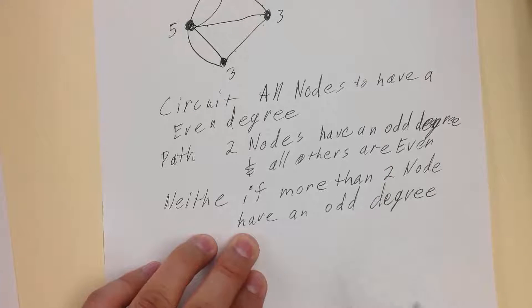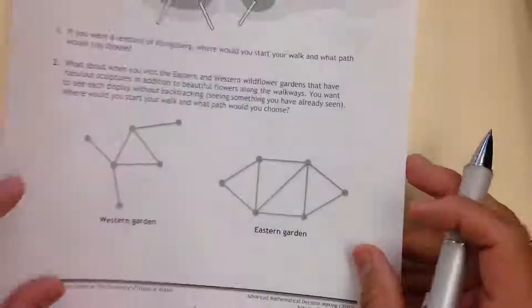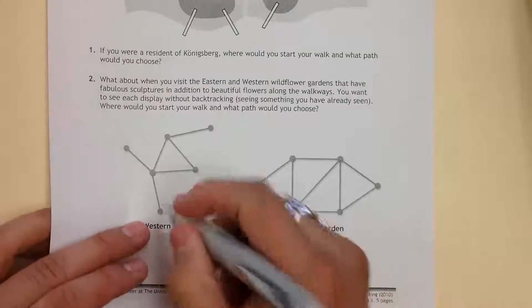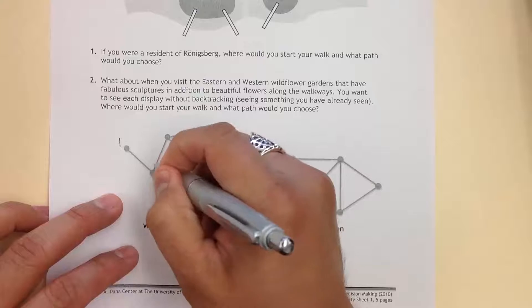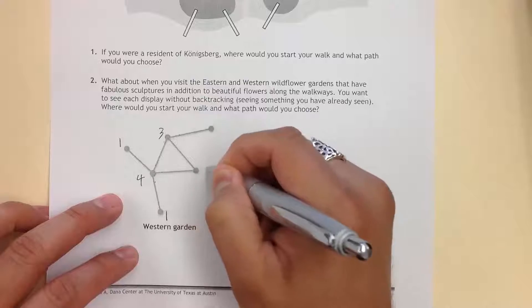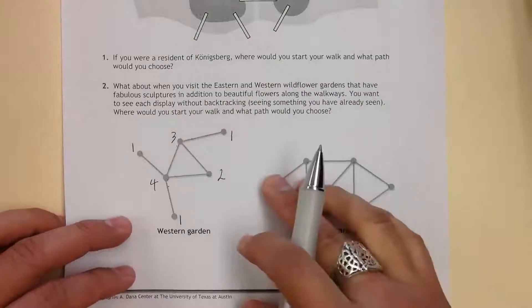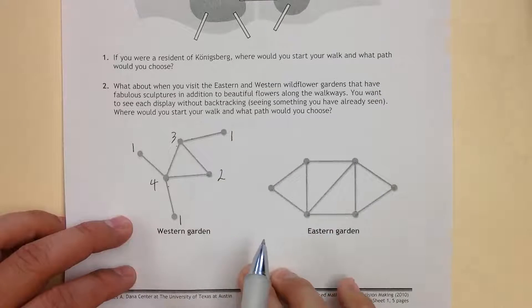Those are all the rules. Here's an example to help you. I'm going to look at this one, the Western Garden. This one has a degree of one, this one has a degree of one, this has one, two, three, four. One, two, three right here. One, two. This is two. This is one. There's no way you're going to find a path or a circuit.